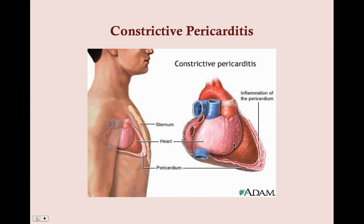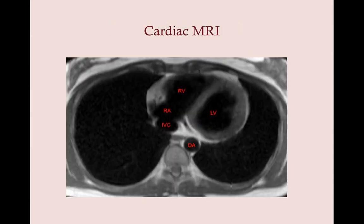History can give you a hint, but definitively — after echocardiogram — we want a definitive diagnosis. The way we do this is through cardiac MRI, to actually distinguish the myocardium from the pericardium.